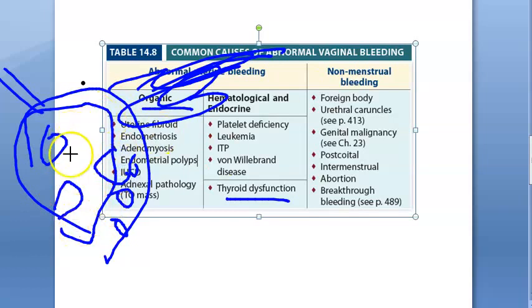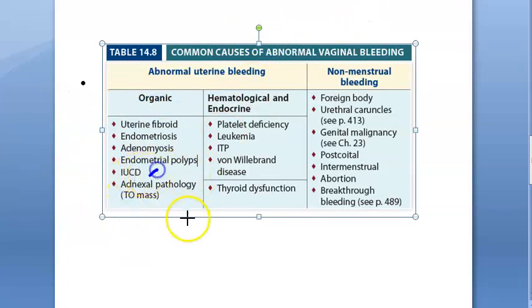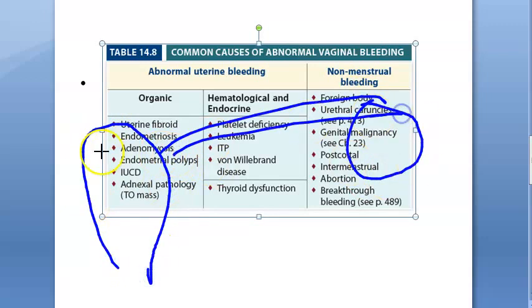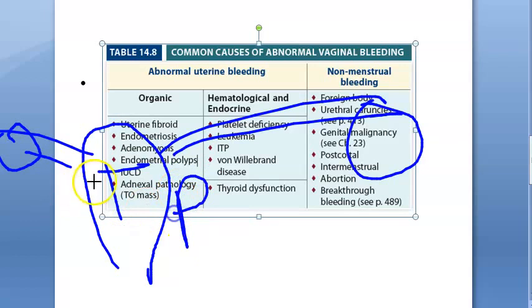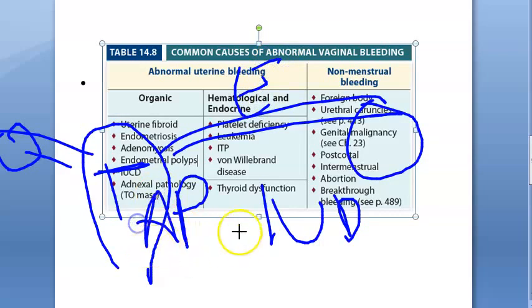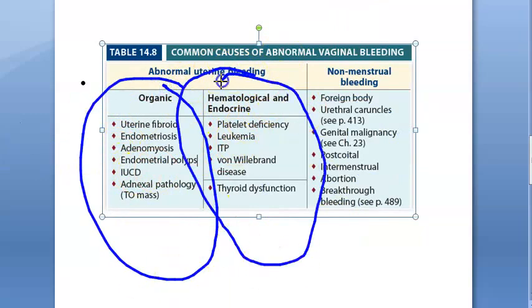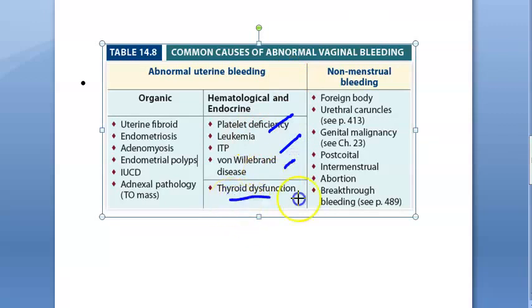Further organic causes include endometrial polyps, an intrauterine contraceptive device (IUCD) causing bleeding, or adnexal pathology such as a tubo-ovarian mass in the fallopian tube or ovary. So causes include tumors, polyps, contraceptive devices, endometriosis, adenomyosis, and tubo-ovarian masses — as well as coagulopathies and thyroid dysfunction.